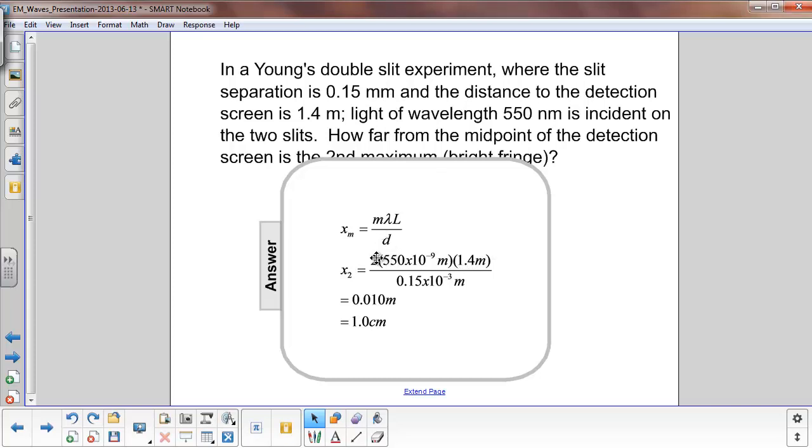So we have a second order fringe which is 2, nano is 10 to the minus 9th, so the wavelength is 550 times 10 to the minus 9th meters.